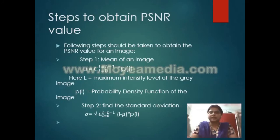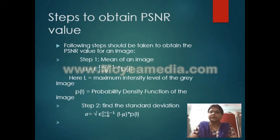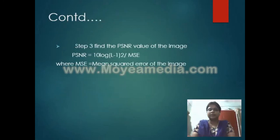The steps to calculate the PSNR value are as follows. Step 1: take the mean of the image — mu equals sigma, L from 0 to L−1, multiplied by P(L), where L is the maximum intensity level of the gray level images and P(L) is the probability density function of the image. Step 2: the standard deviation is obtained by the root value of sigma, L from 0 to L−1, of (L − mu)² multiplied by P(L). Step 3: PSNR equals 10 × log((L−1)² / MSE), where MSE is the mean squared error of the image.